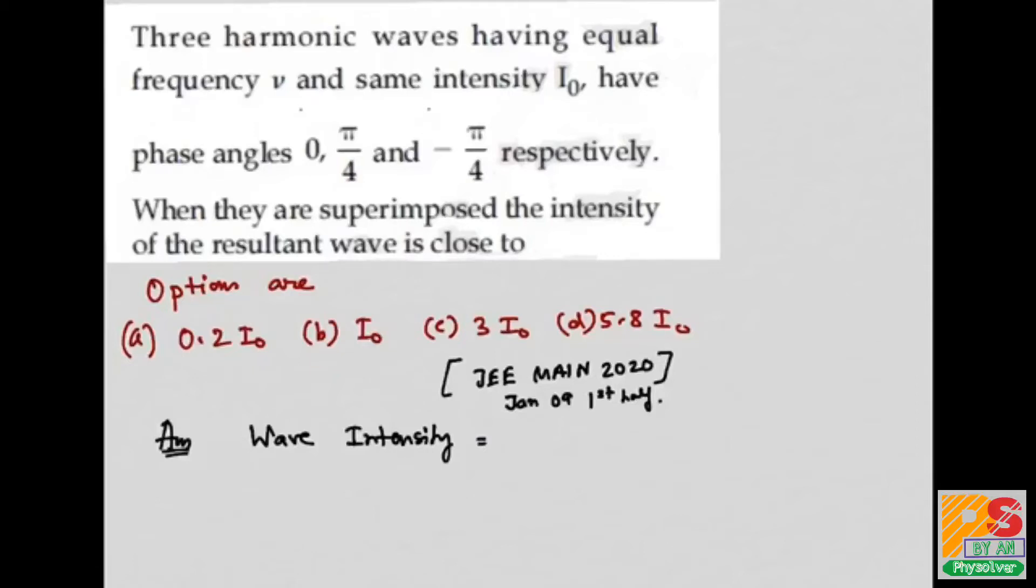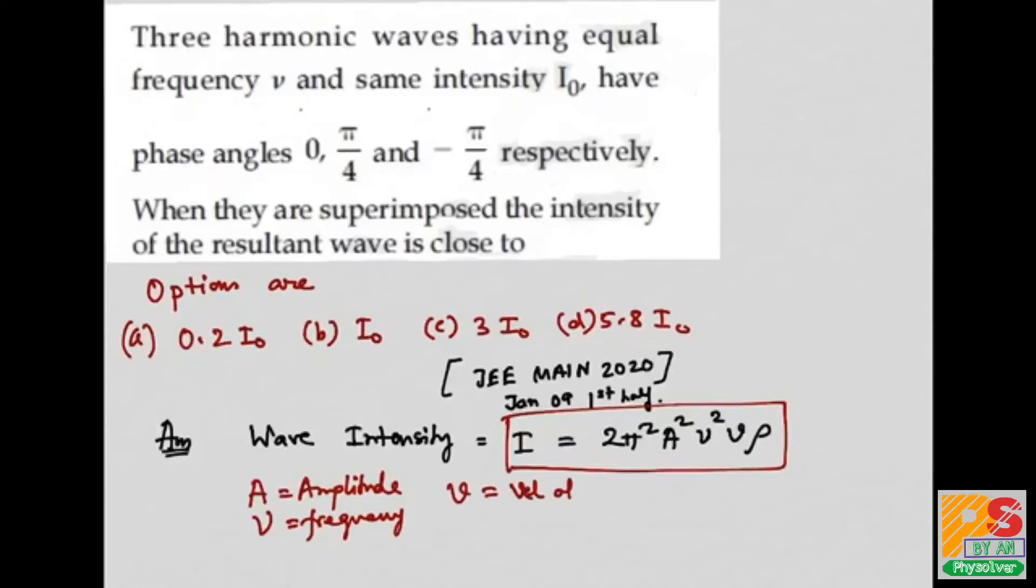It is given by this formula: 2π²A²ν²vρ. This is the formula for wave intensity, where A is the amplitude of the wave, ν is the frequency, v is the velocity of the wave, and ρ is the density of the medium in which the wave is propagating.